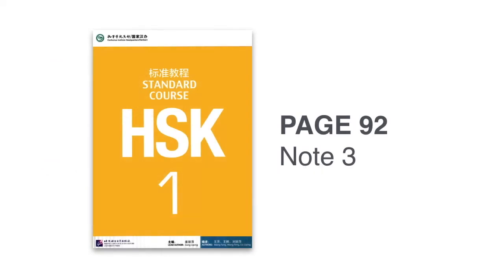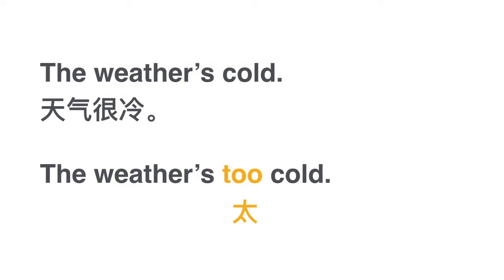Turn your textbook to page 92 and let's take grammar point number 3. 'The weather is too cold.' The 'too' can be expressed with the word 太. See the character? It's just the character 大, meaning big. Remember 多大 — how old are you? 你多大了? The character 大, with a dot at the bottom, becomes 太.